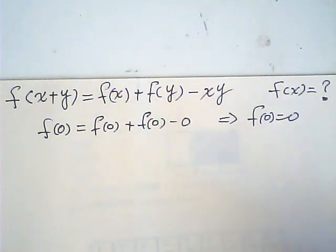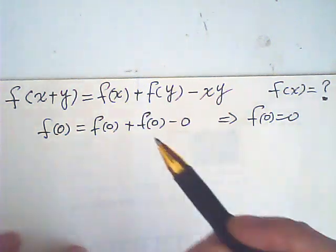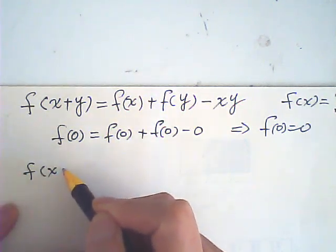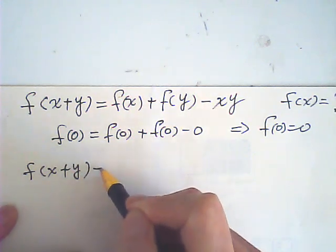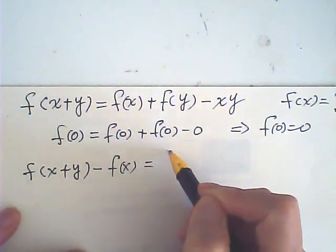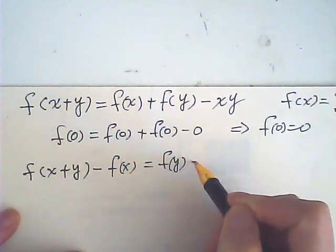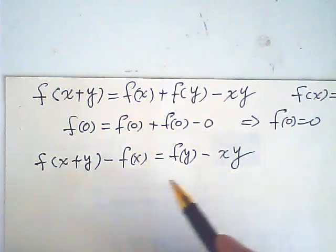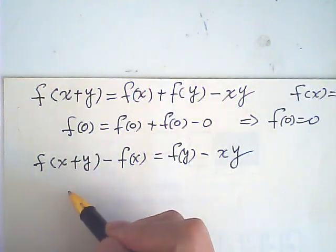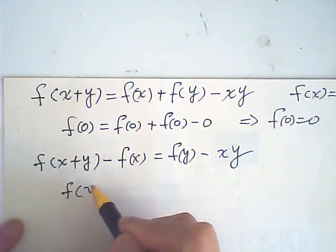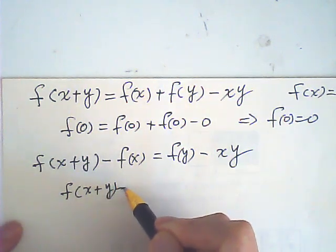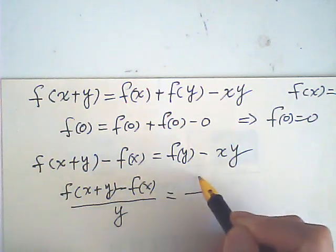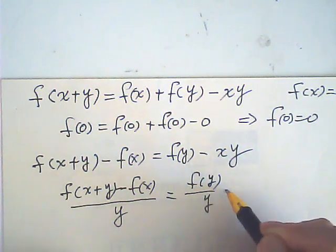I'll just create one more condition. Now, I move this one to the left. So, f of x plus y minus f of x is equal to f of y minus xy. Now, then I divide it by y everywhere. Suppose y is not zero. Then, f of x plus y minus f of x divided by y is equal to f of y over y minus x.